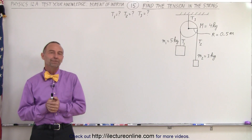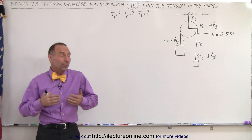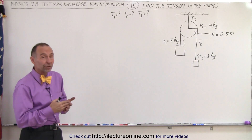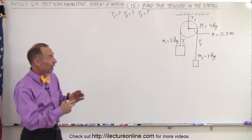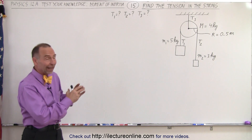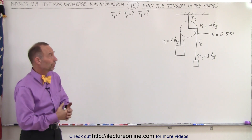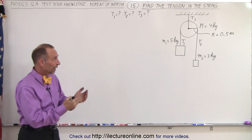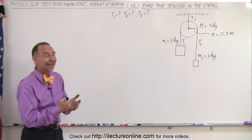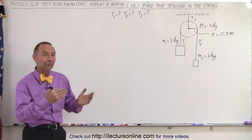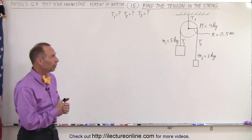Welcome to Electronline. Our next problem may look familiar. We have a pulley that has mass, so therefore it has a moment of inertia, and two weights hanging one from each side of the pulley.